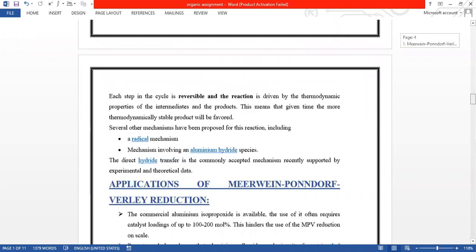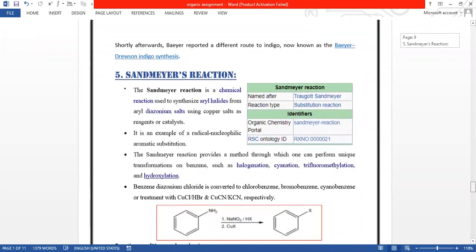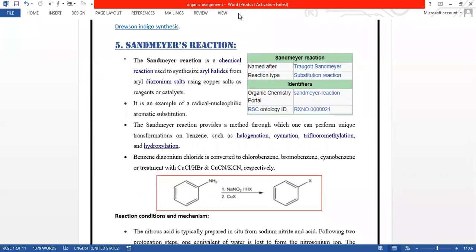I'm going to talk about the Sandmeyer's Reaction. The Sandmeyer's Reaction is basically a chemical reaction through which we can synthesize aryl halide from aryl diazonium salts using copper salt as regenerative catalyst. It was named after drogoid Sandmeyer's and the reaction type is a substitution reaction in which one atom in the molecule can replace the other molecule. So it's an example of the radical nucleophilic aromatic substitution.